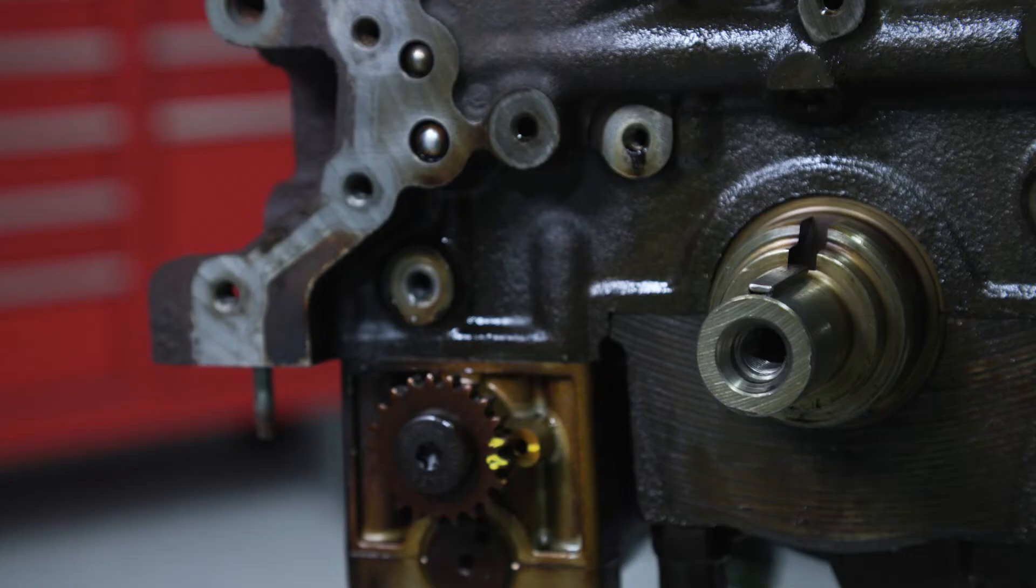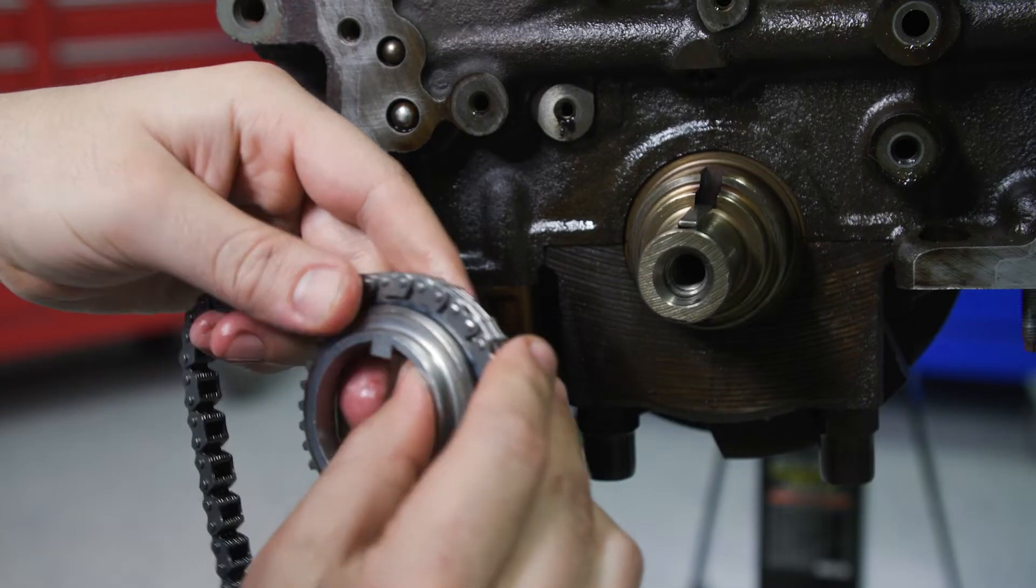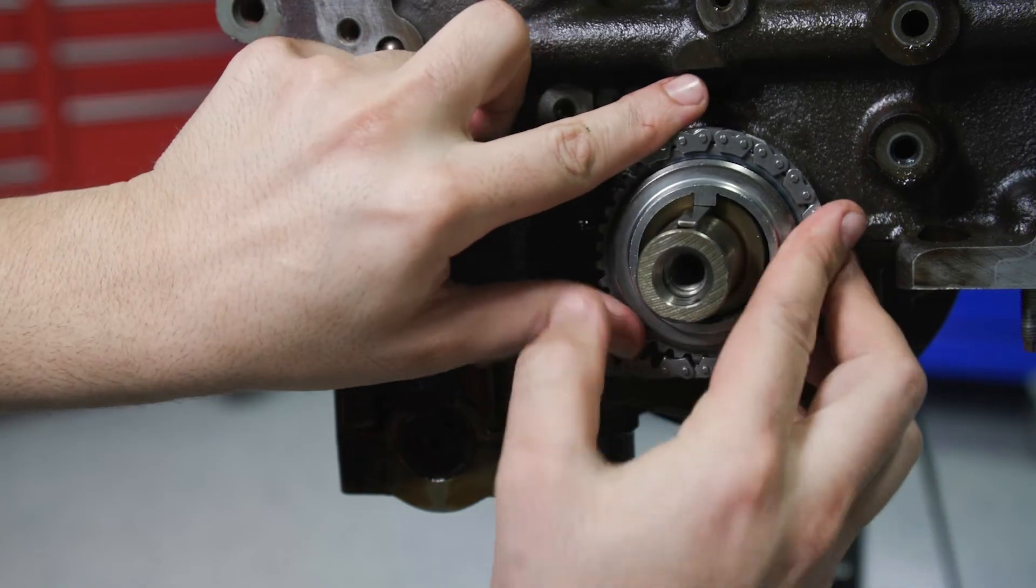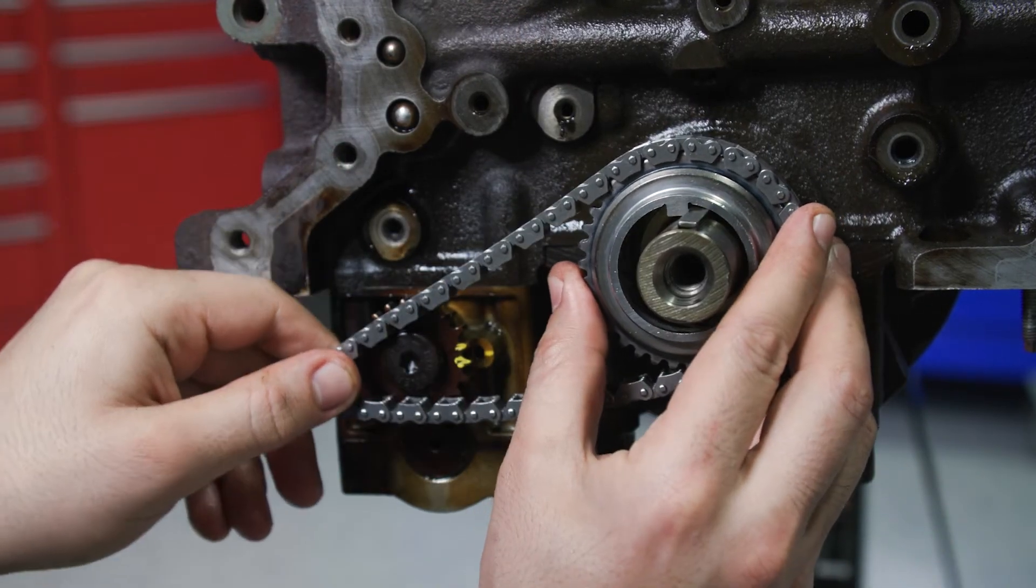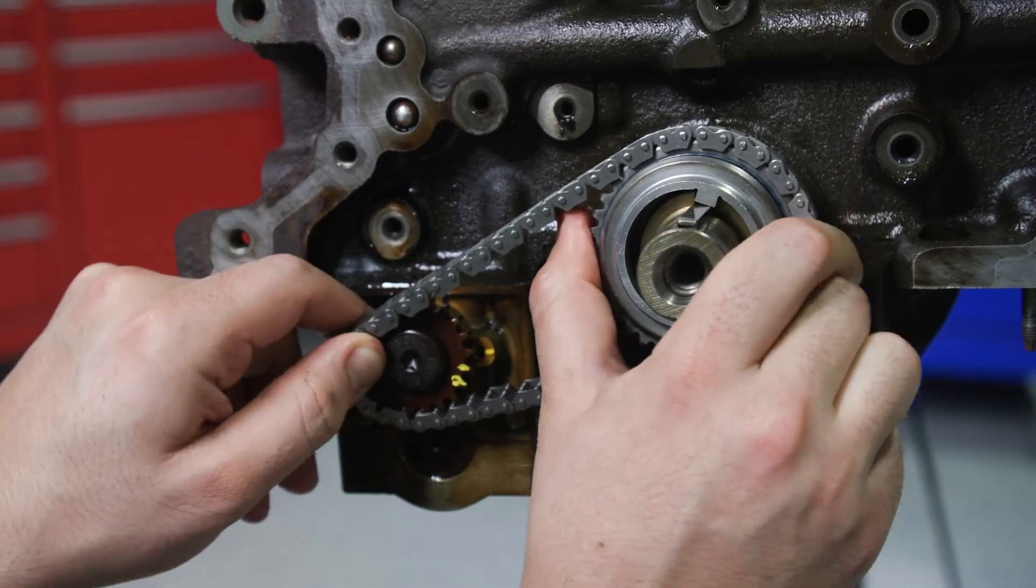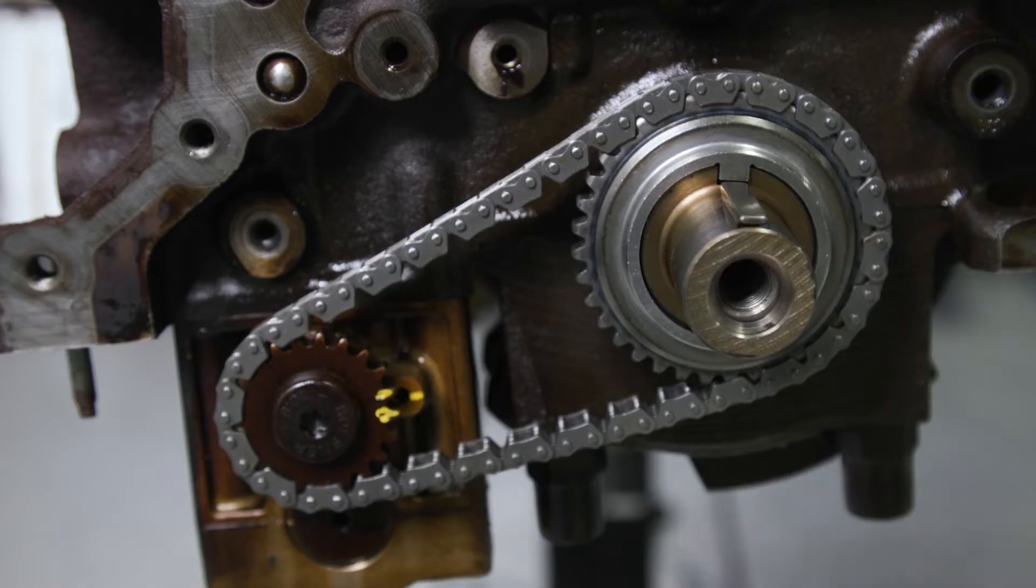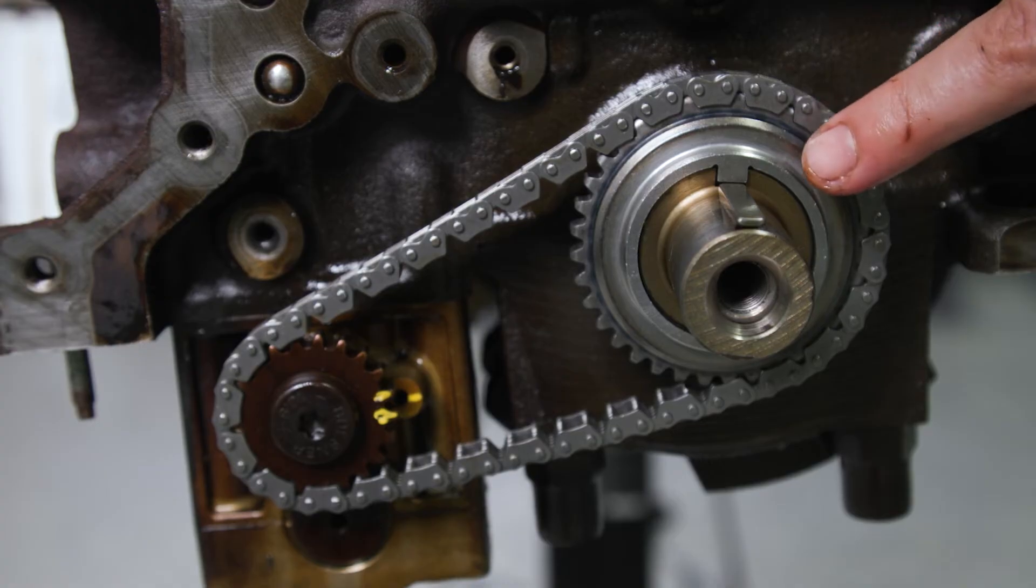Verify the engine is still at top dead center with keyway at 12 o'clock. To reassemble the balance shaft, start by placing the crank sprocket and chain loosely on the crankshaft. Line up the balance shaft gear with the timing marks on the block and then install the chain. Double check the crank remains at top dead center.